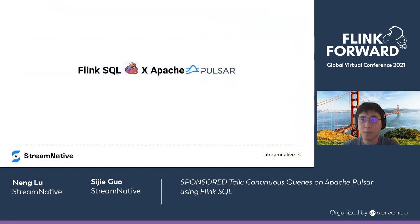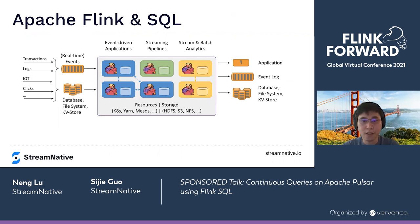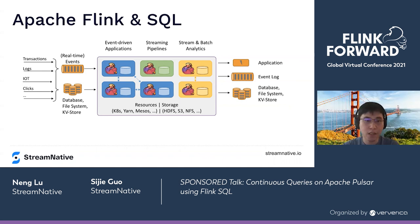Now we can get into the interesting part, which is Flink SQL and Apache Pulsar integration. Apache Flink is nowadays the de facto streaming processing framework for big data. It serves different use cases such as event-driven applications, streaming pipelines, and stream and batch analytics.